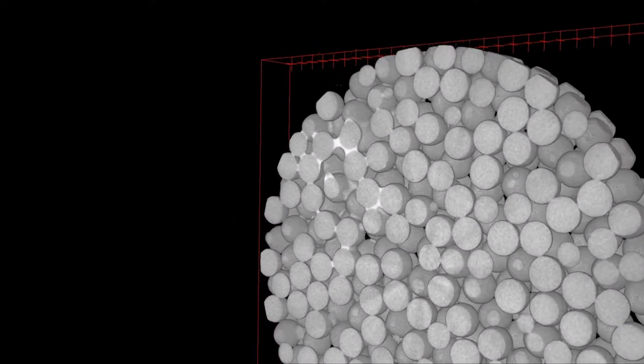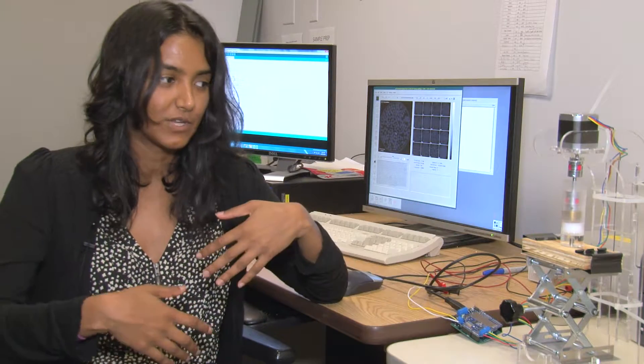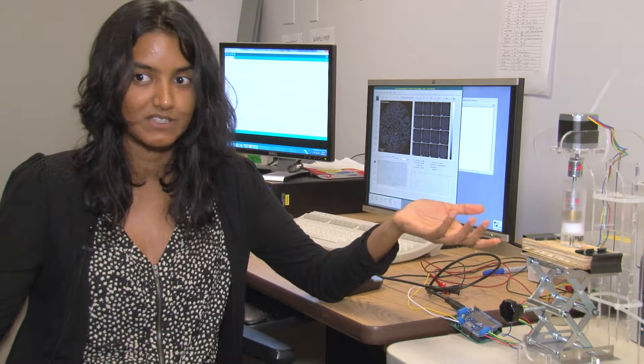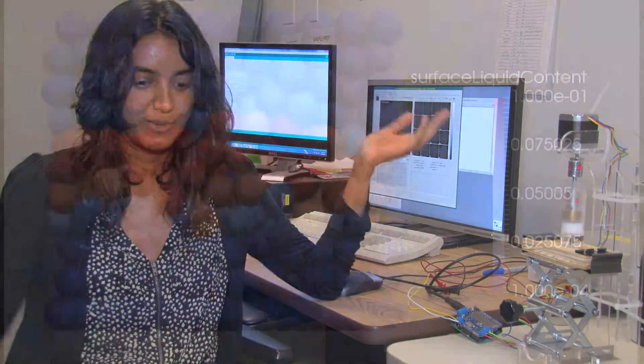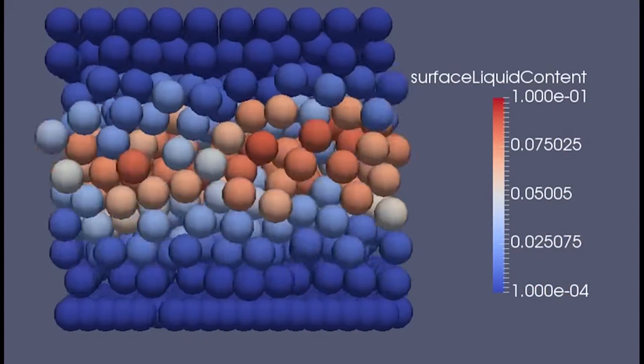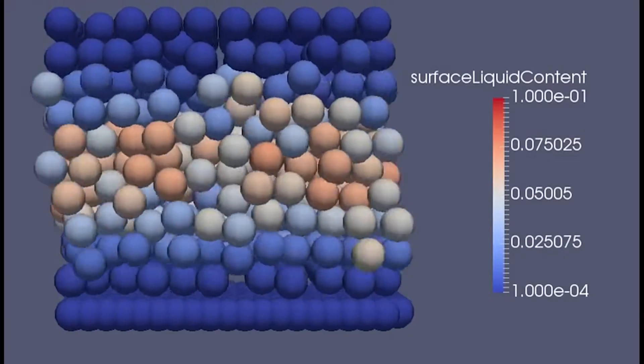The results don't mean anything unless you can actually simulate real life, and this is the real-life experiment. If it can be validated with these experiments, then we know that even in a large scenario where we're mixing in, say, a tumbler, we can accurately predict how that liquid is spreading.